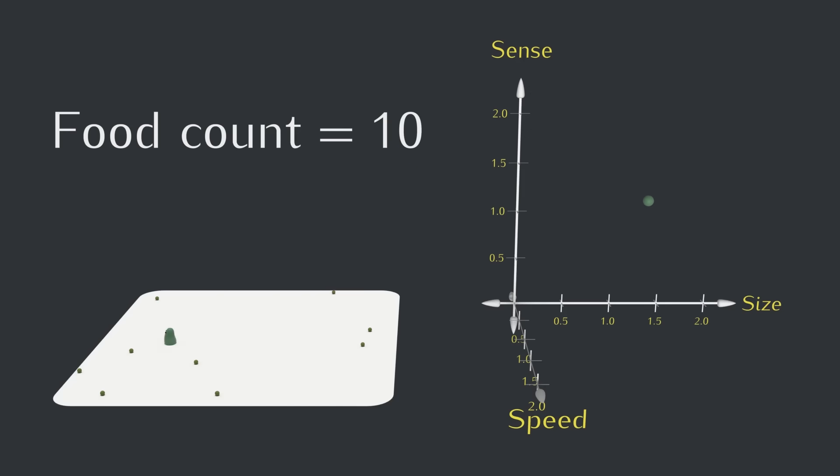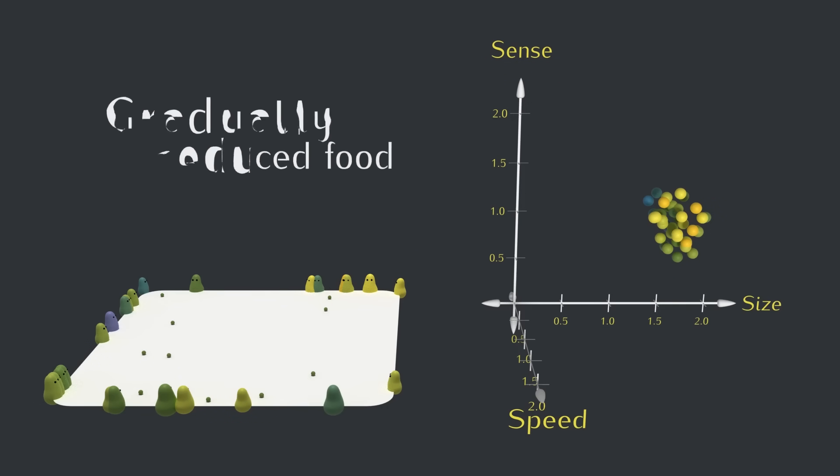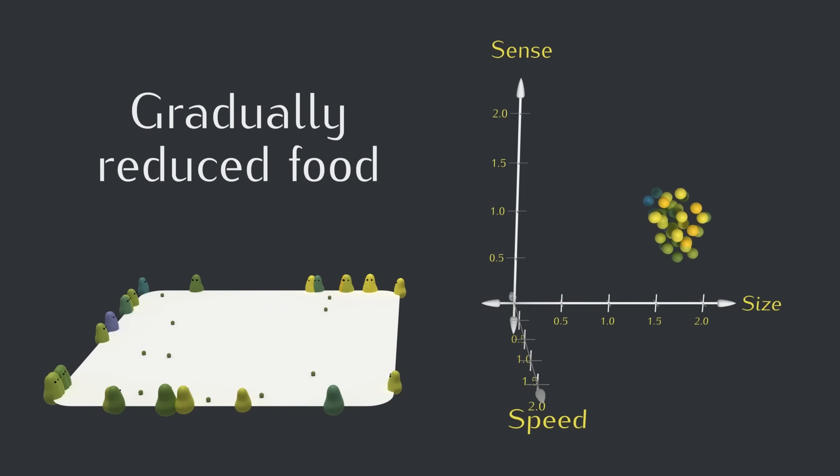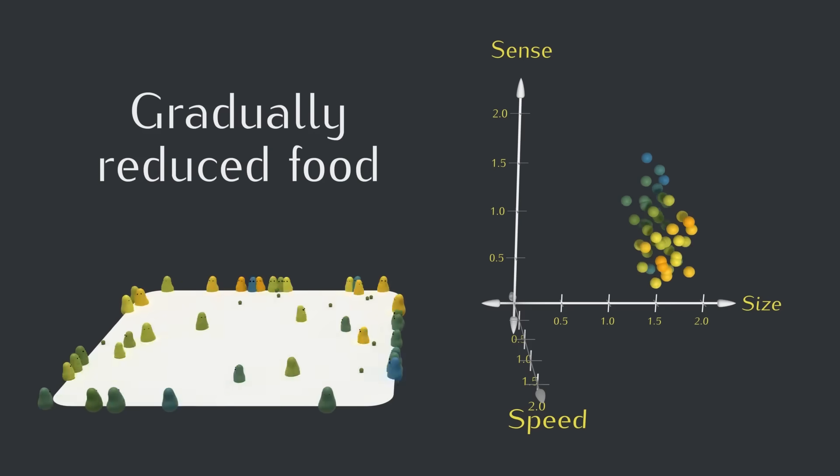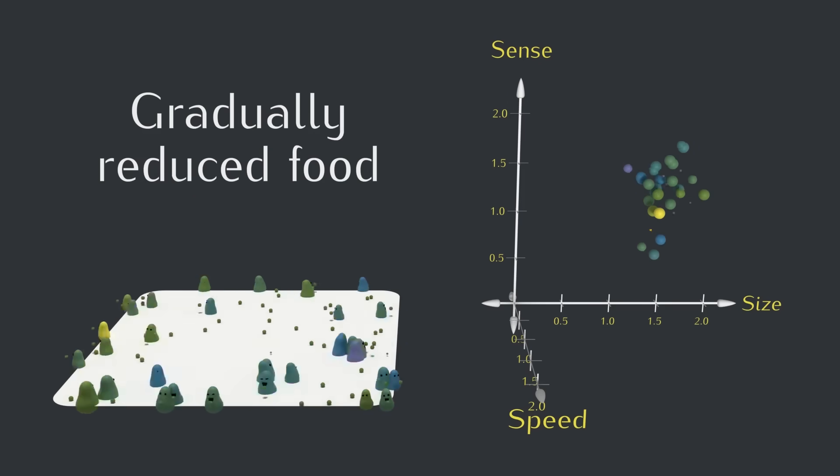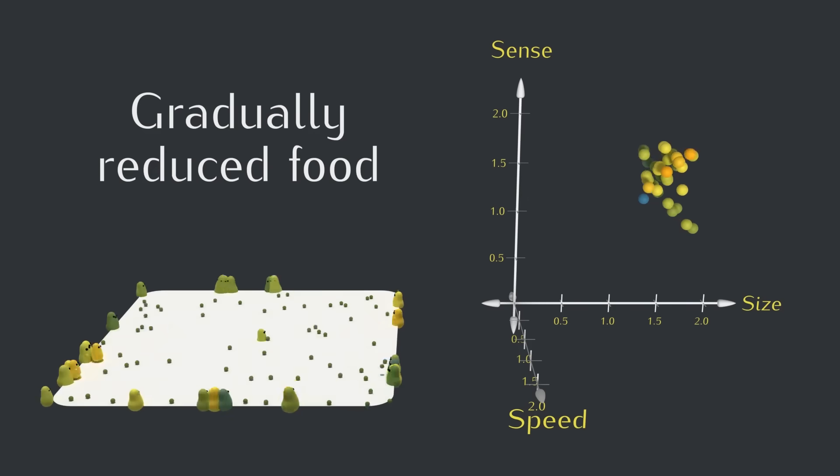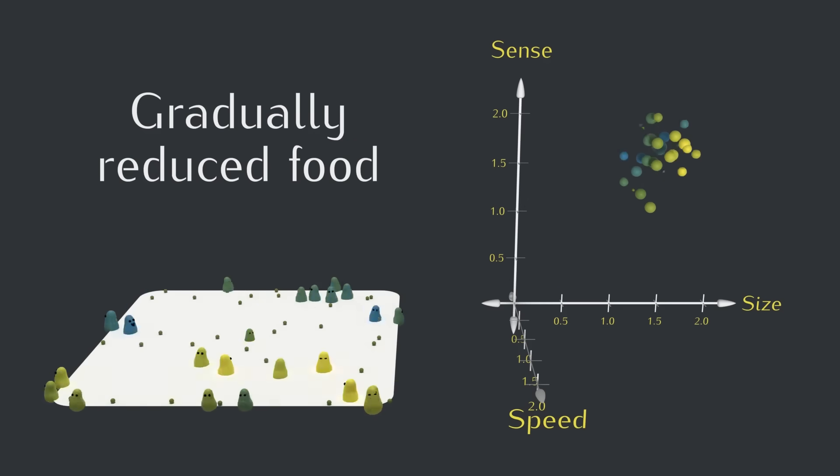So instead, let's do this. We'll rewind to before we reduce the food, and then every two days we'll put out one less piece of food until eventually we're only putting out 10 pieces of food each day. All right.